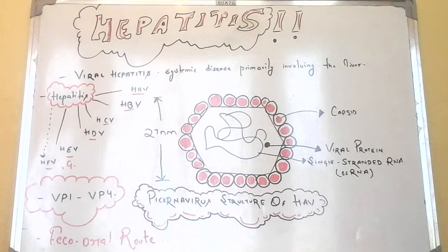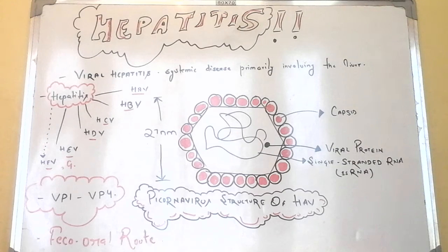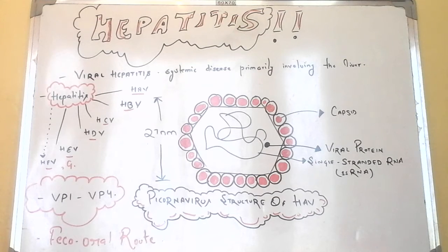The epidemiology of type A hepatitis resembles that of poliomyelitis. Now we will talk about laboratory diagnosis. The virus can be visualized by immunoelectron microscopy in fecal extracts during the late incubation period and the pre-icteric phase.